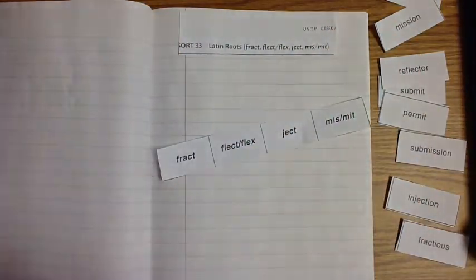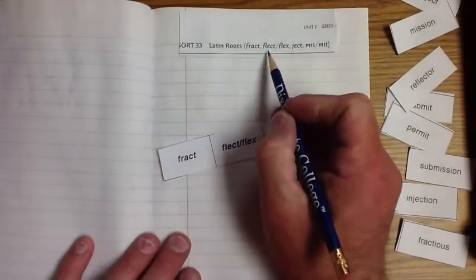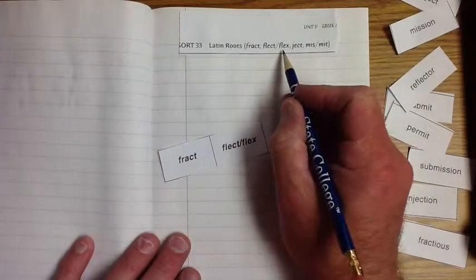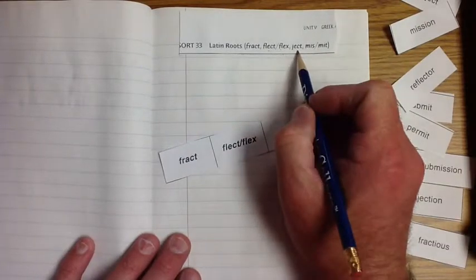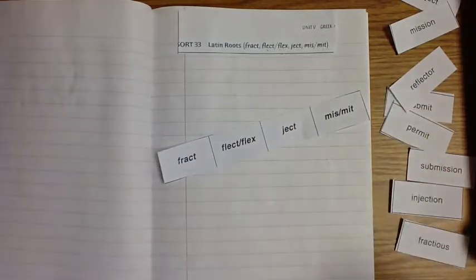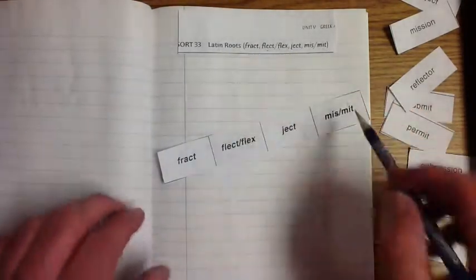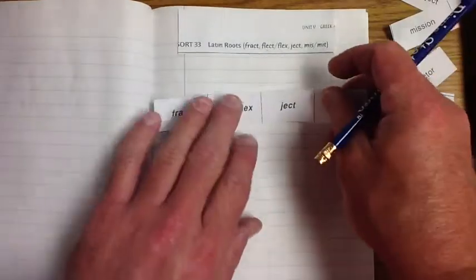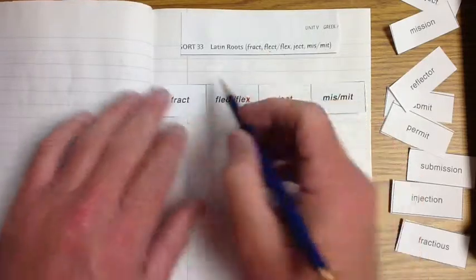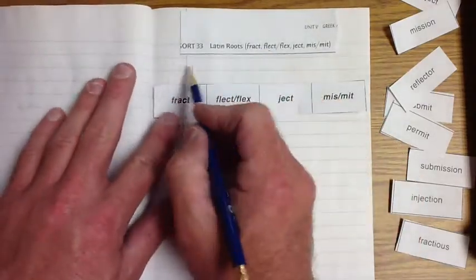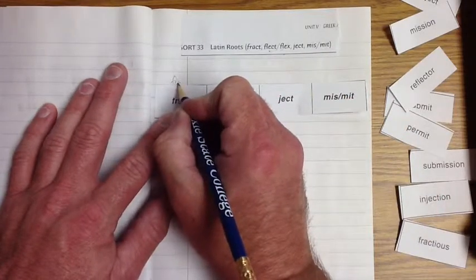Looks like we're looking at Latin roots, like I said before, and it looks like we're doing fract, flect, flex. These two are similar. Ject, miss, and mit. So as we talk about these different things, we'll write them down. We've got to find out what they mean though also. So let's look at here. We're going to write this out. I like to leave a couple lines because this one we're going to write our definition. This one we're going to write our word. So let's write fract, underline it.